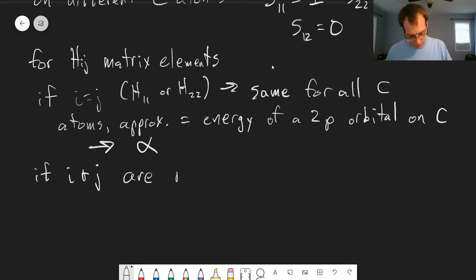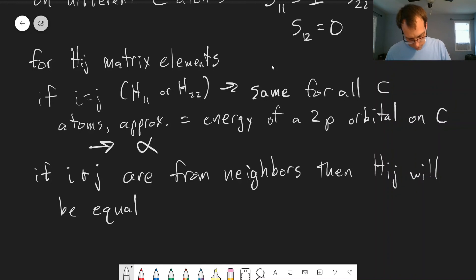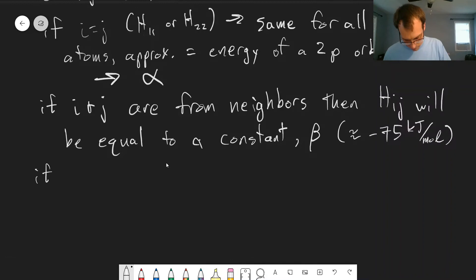And then we need to know about what if i and j are not the same. If i and j are from neighbors, carbon atoms that are right next to each other, then all the hij that are from neighbors will be equal to a constant that we'll call beta, which is approximately equal to negative 75 kilojoules per mole. And this is from experimental observations. And then if i and j are not neighbors then hij equals 0. If they're far enough away we assume there's no overlap and that this integral will just go to 0.